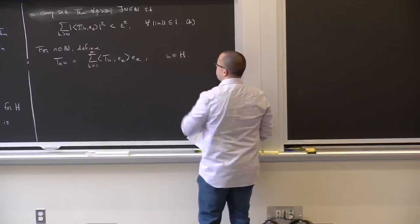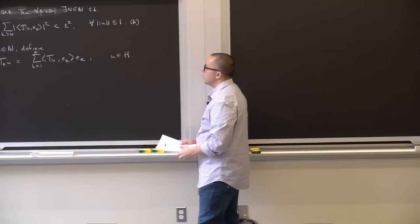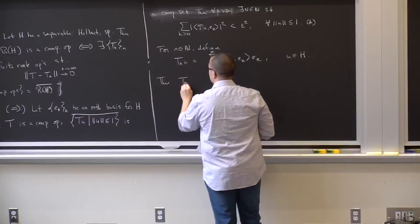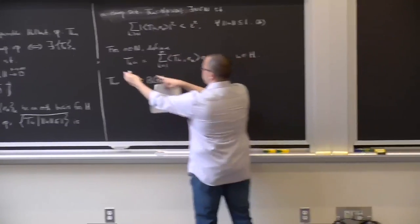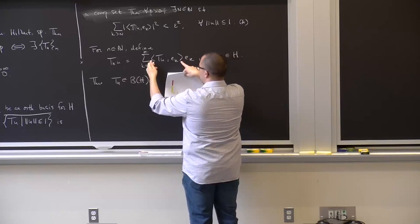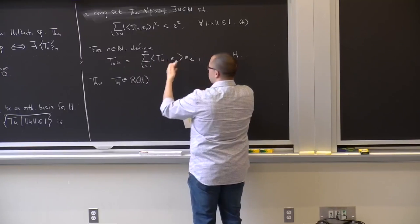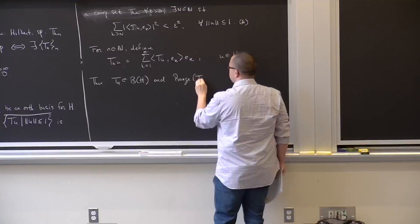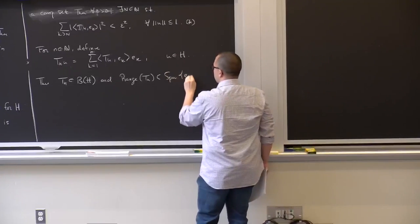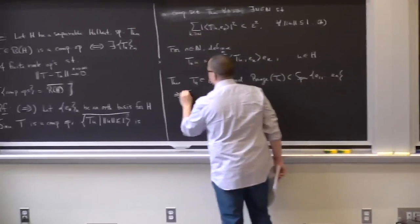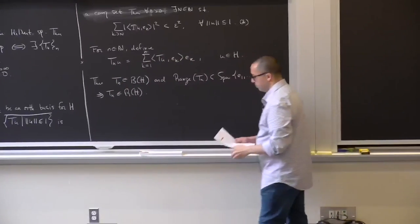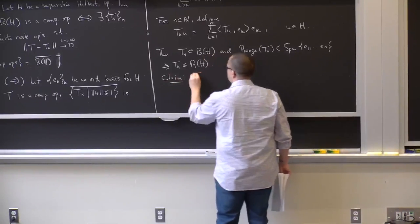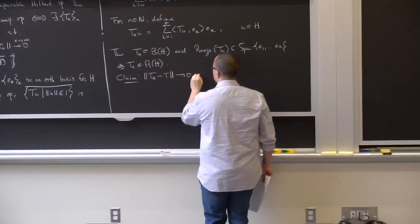Define Tₙ(u) = Σ_{k=1}^{n} ⟨Tu, eₖ⟩eₖ for u in H. This is a bounded linear operator — its norm is at most ‖T‖ — and its range is contained in the span of {e₁, ..., eₙ}, so it is finite rank. We claim this sequence of finite rank operators converges to T as n → ∞.